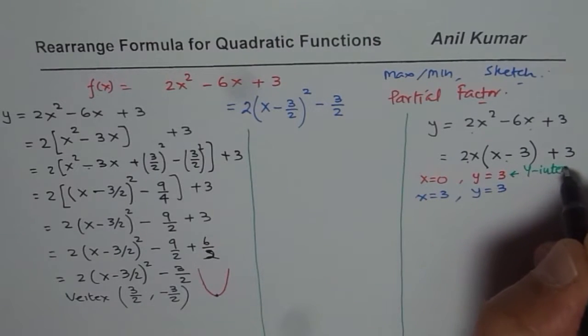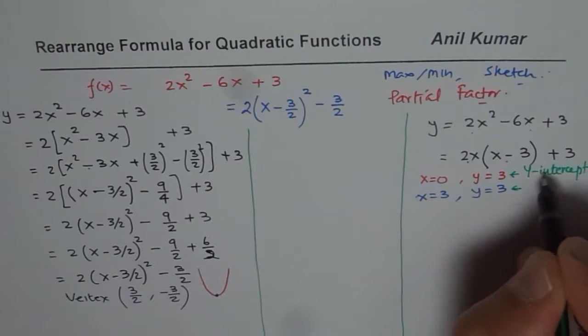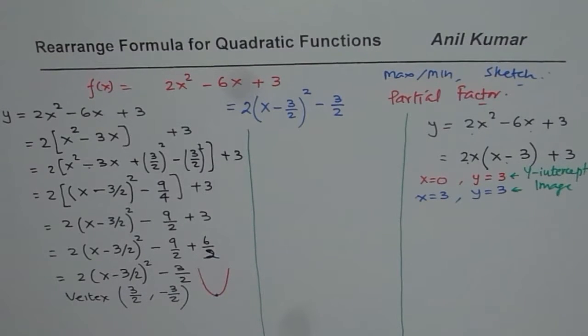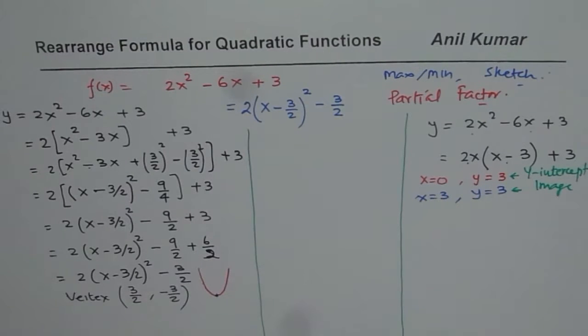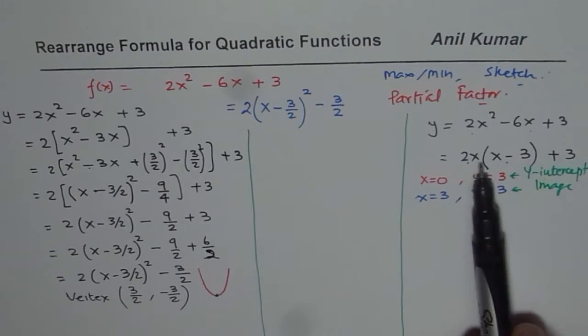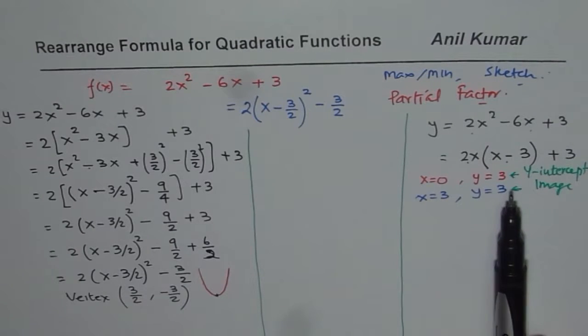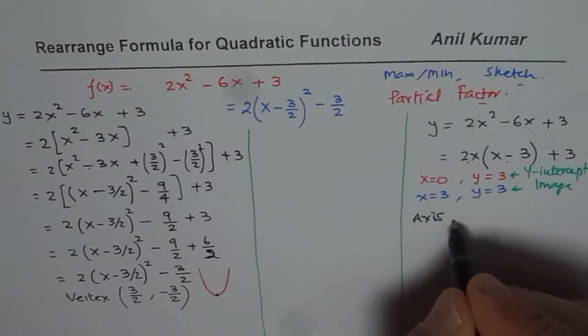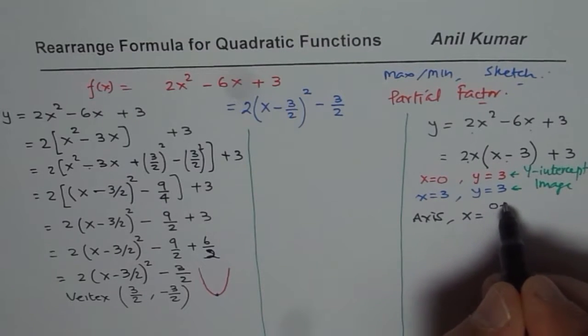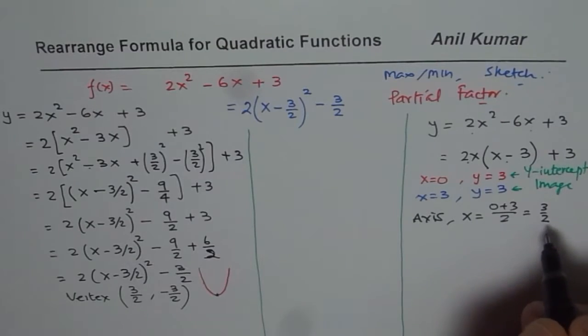Perfect. So what you notice in this particular case is that with one factor, you get y-intercept. With the other factor, you get the image of the y-intercept. Your y-intercept in this case is 3. And the image of the y-intercept is at x equals to 3, it is 3. The parabola is opening upwards. These are very critical points. And how do you get the vertex? The axis will go right through the center of these two. So the axis of the curve will be x equals to average of these. That means 0 plus 3 divided by 2, which is 3 over 2.